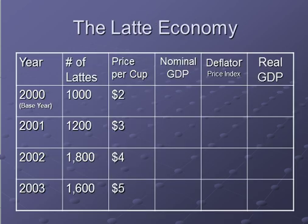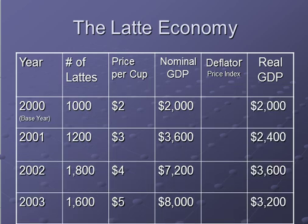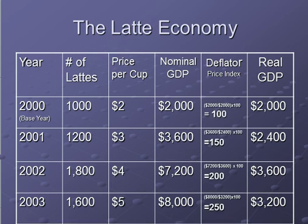Looking at this latte economy, our base year is the year 2000. To calculate nominal GDP, it's simply quantity times price for each year. To determine real GDP, we use the base year price of $2 and multiply all quantities by that to get our real GDP values. To find the GDP deflator — the price index — we take nominal over real GDP times 100. That's how we determine the various calculations to calculate GDP.